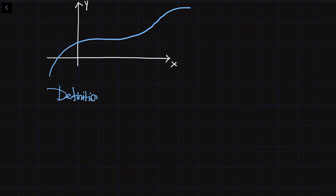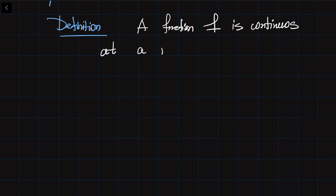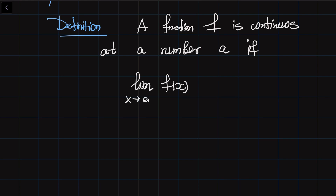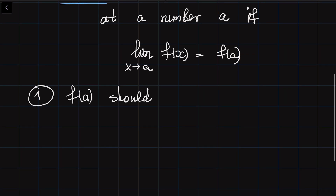Let us write down the definition of a continuous function. A function f is continuous at a number a if the limit of f(x) as x goes to a is simply equal to f(a). At first glance the definition may not be clear, but it actually implies three consequences. The first is that f(a) should exist — your function should have a defined value at the point a.